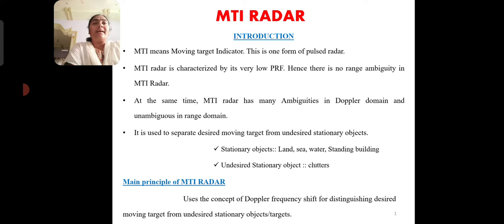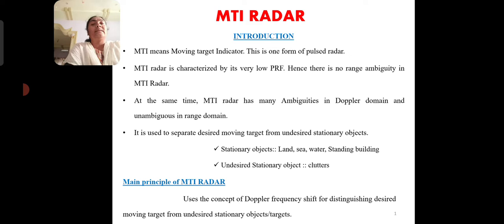The main motive of MTI radar is to separate moving targets from stationary targets. We classify stationary targets as land, sea, water, standing buildings, and other undesired stationary objects called clutters. The main principle of MTI radar is to use the concept of Doppler frequency shift to distinguish between moving targets and undesired stationary targets.